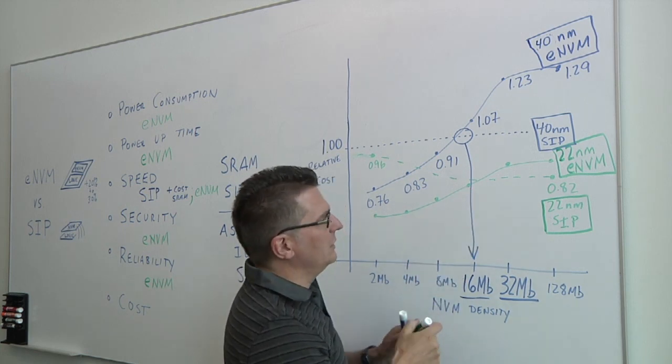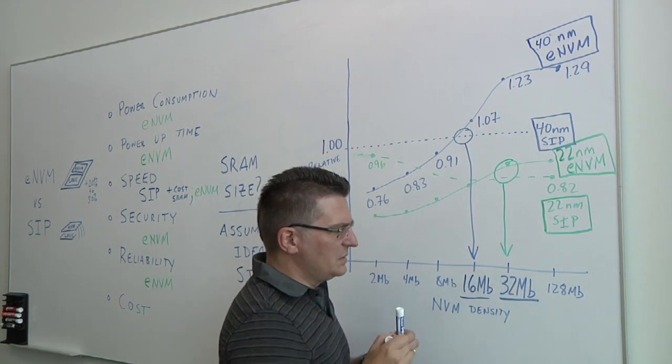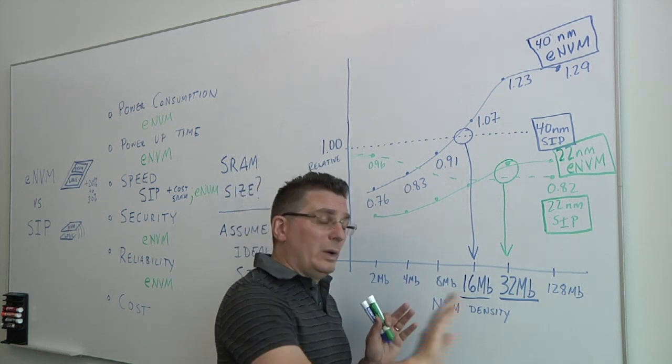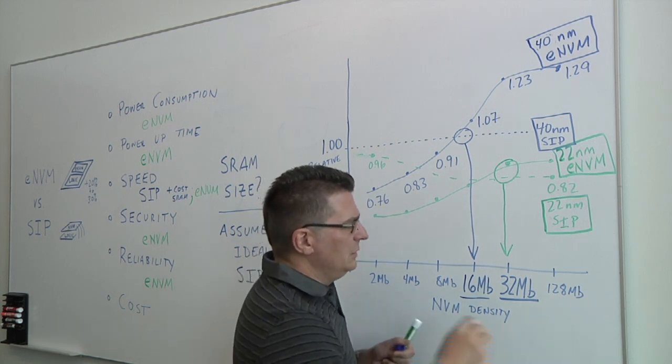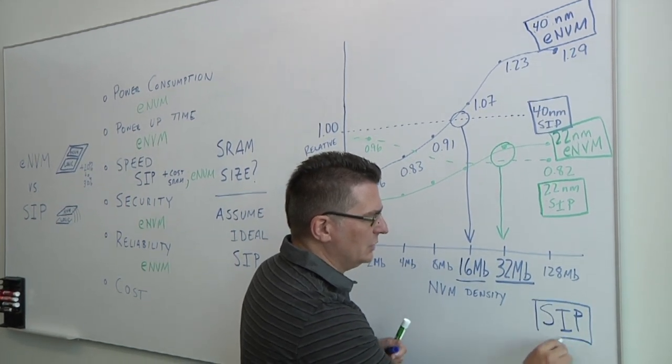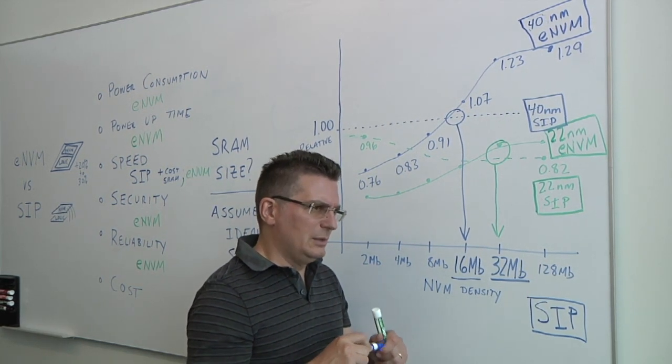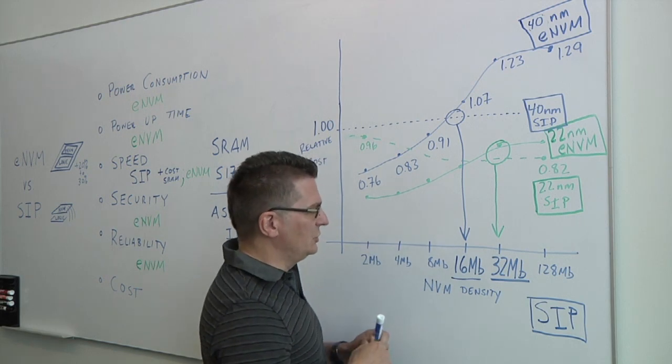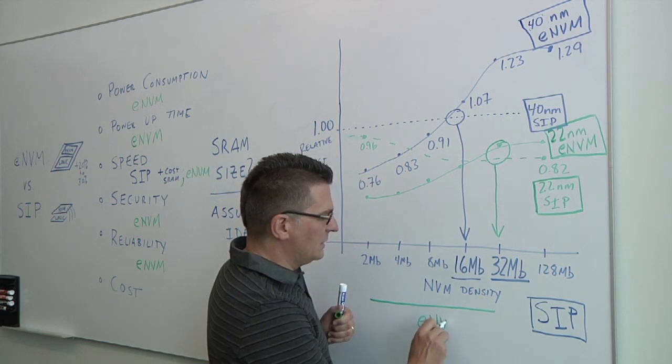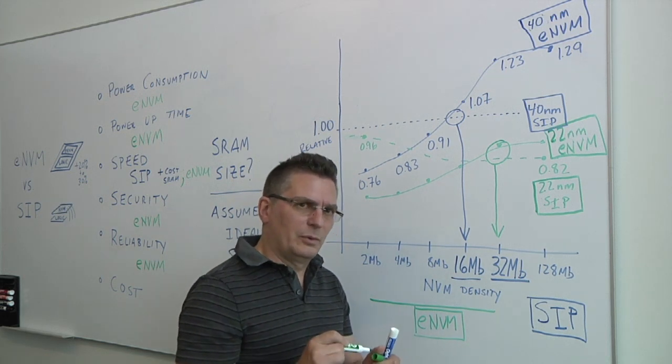And then the crossover point at 22 nanometers becomes 32 megabit. So to sum this up, if you have an NVM density that's going to be greater than 32 megabit, then you probably do want to use a SIP. That would be your lowest cost option, and that would be the way to go. However, if you're at 32 megabits or 16 megabits and below, depending on which process you want, then for this whole range, then embedded NVM does become even the lowest cost solution with all the advantages we talked about for power, reliability, and security.